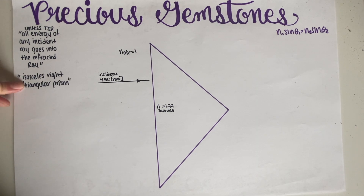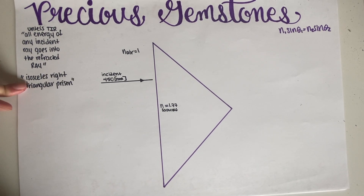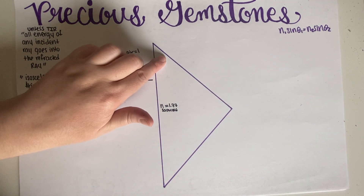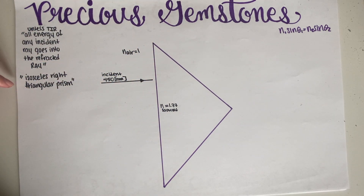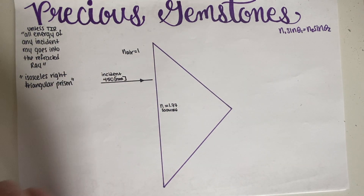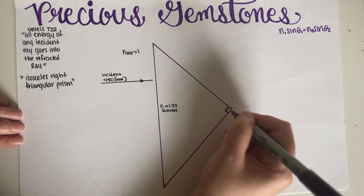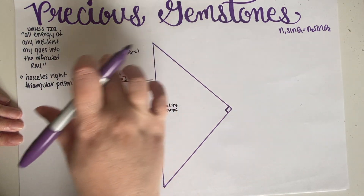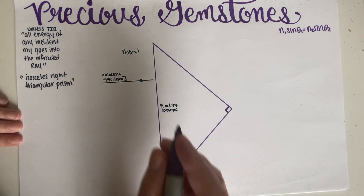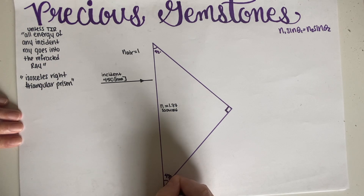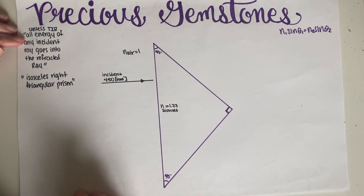A quick geometry review: whenever a triangle is isosceles, two angles are exactly the same. For a right isosceles triangle, the third angle is 90 degrees, and because the other two must be equal to each other, they are each 45 degrees. These angles aren't explicitly given in the problem, but since it says isosceles right triangular prism, we know the angles are 90°, 45°, and 45°.